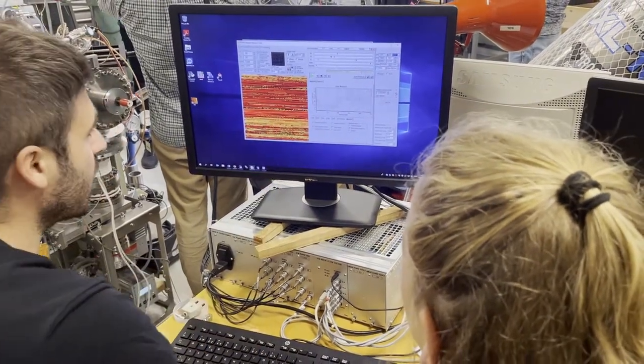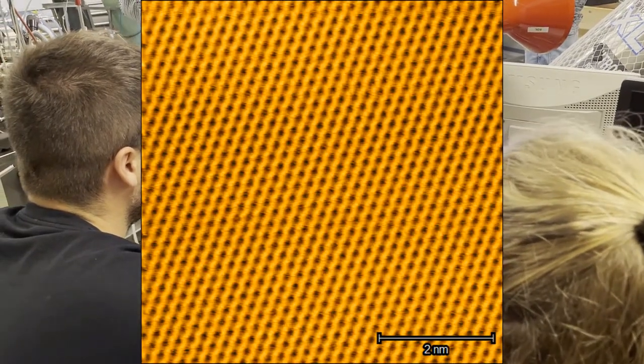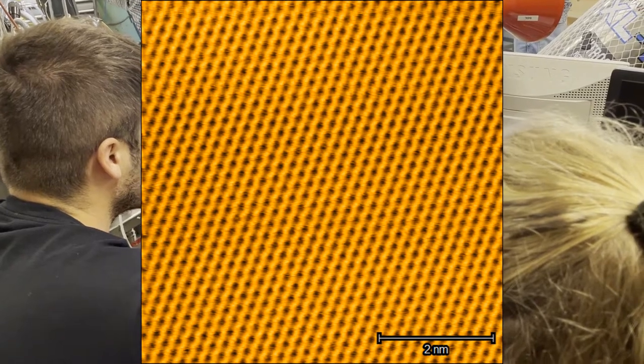We can actually see atoms here, but it might be a bit difficult for an untrained eye. Therefore, we show you an even better image. Here you can clearly see the carbon atoms in the graphite surface.